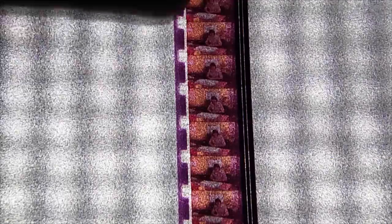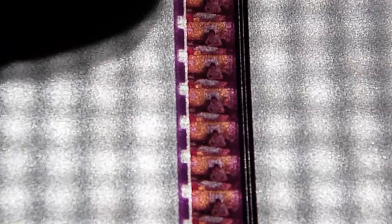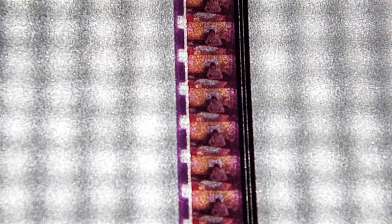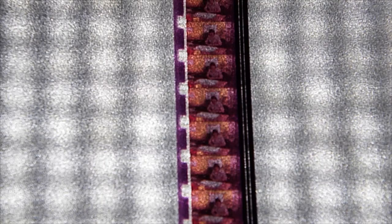And a photo receptor, or photo cell, on the other side of the strip. And that picks up the intensity of light coming through there, and the projector works out the audio from that.